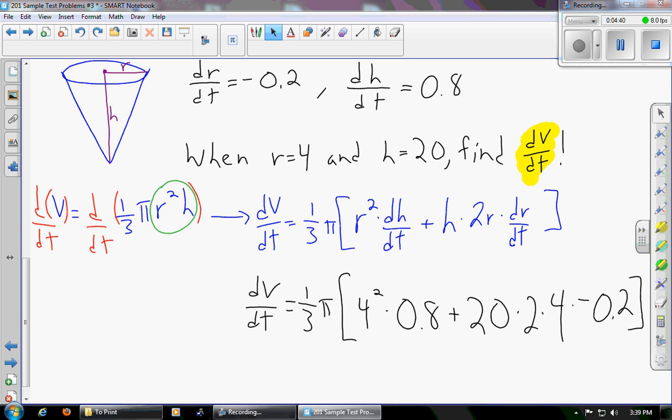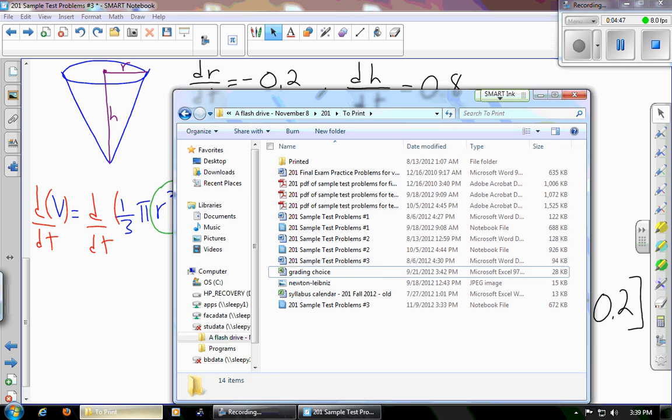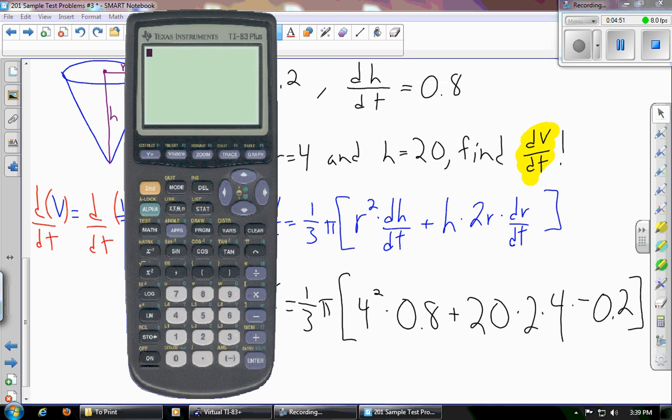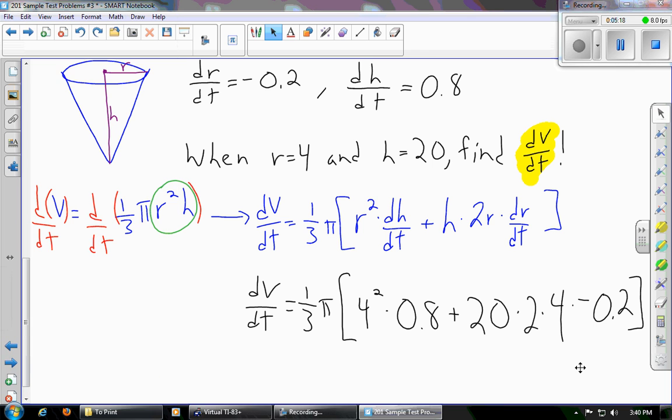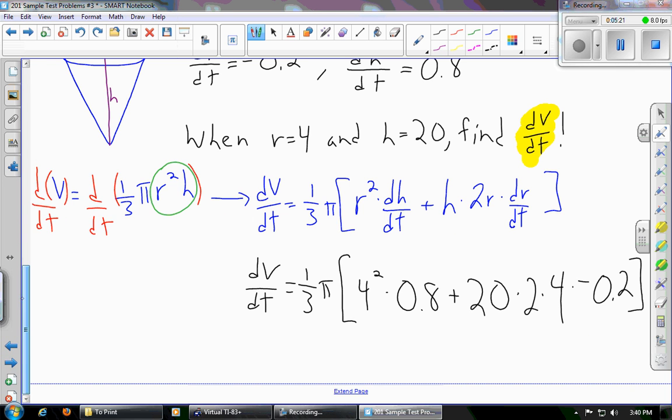And this is now just an arithmetic question. So our job is to find what that whole thing is equal to very carefully. I'll type it into the calculator. I think we can do this in one fell swoop. 1 third pi times parentheses. 4 squared times 0.8 plus 20 times 2 times 4 times negative 0.2. So if I've typed that correctly, we'll get the right answer at the end. Negative 20.106. So that's what we'll write. dv/dt is roughly negative 20.106.